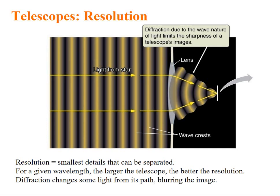Resolution. One other important point which we have to discuss in telescope is resolution. Resolution is the smallest detail that can be separated. For a given wavelength, the larger the telescope, the better the resolution. Diffraction changes some light from its path blurring the images.